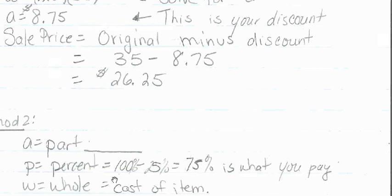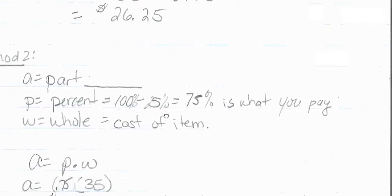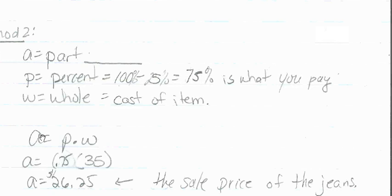And w would represent the cost of the item. So if we do a equals p times w, I would do 0.75 because that's how much I'm paying, times 35 which is the cost of the jeans. My a, the part that I'll be paying, is $26.25. So method 2: we subtract our discount from 100% and we immediately get our answer.